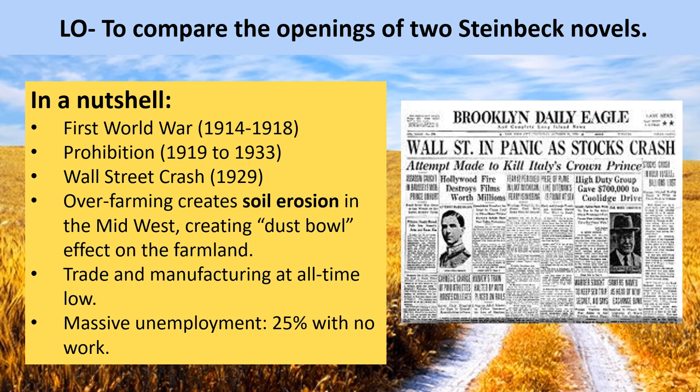Then we have a really serious financial downturn known as the Wall Street Crash. This plummeted not only America but most of the Western world into financial downturn. There were huge problems with inflation, where money basically loses its value overnight. As a result, lots of people lost their jobs and trade. Where you're selling and buying goods and manufacturing — usually in factories — this all starts to stop. At one point, 25 percent of the country were unemployed.